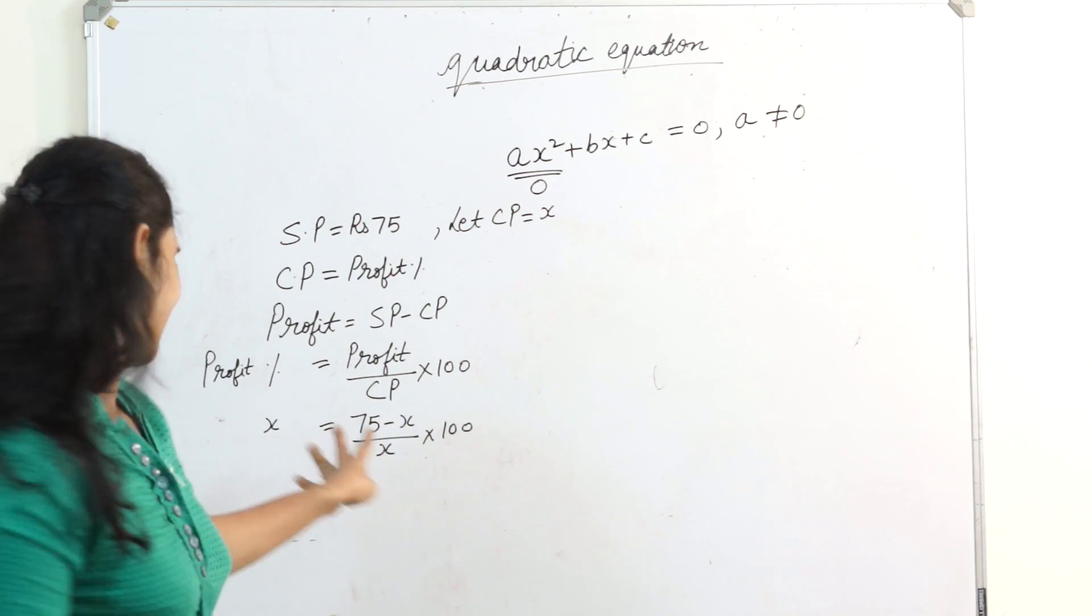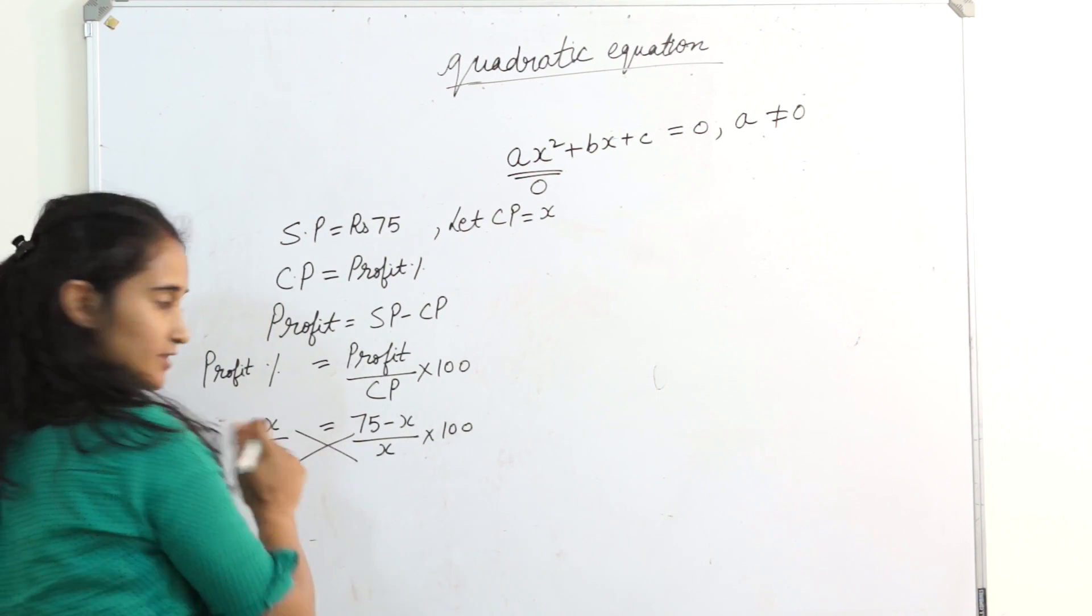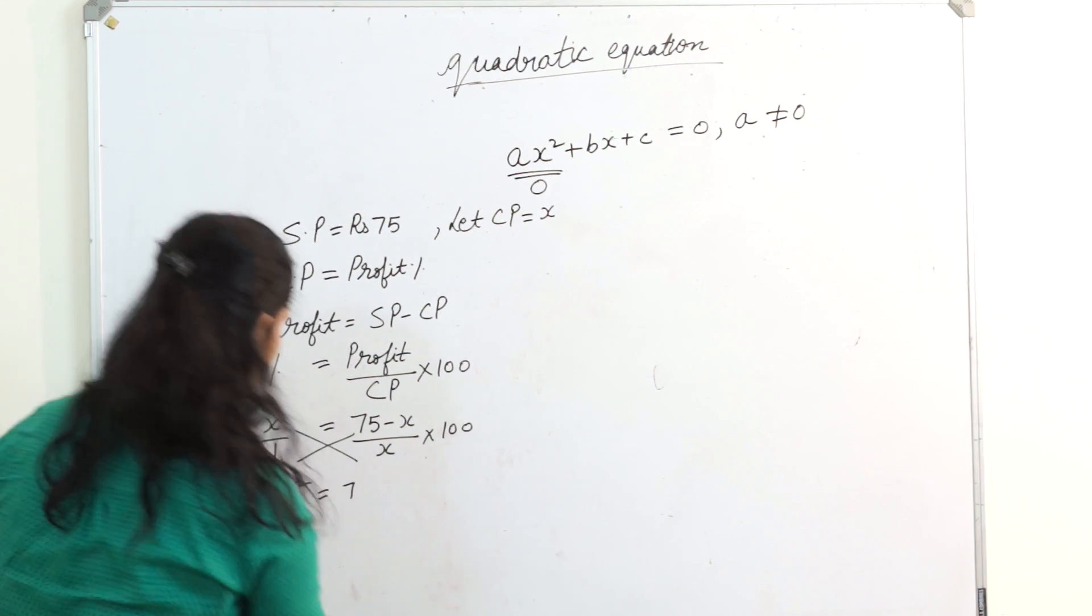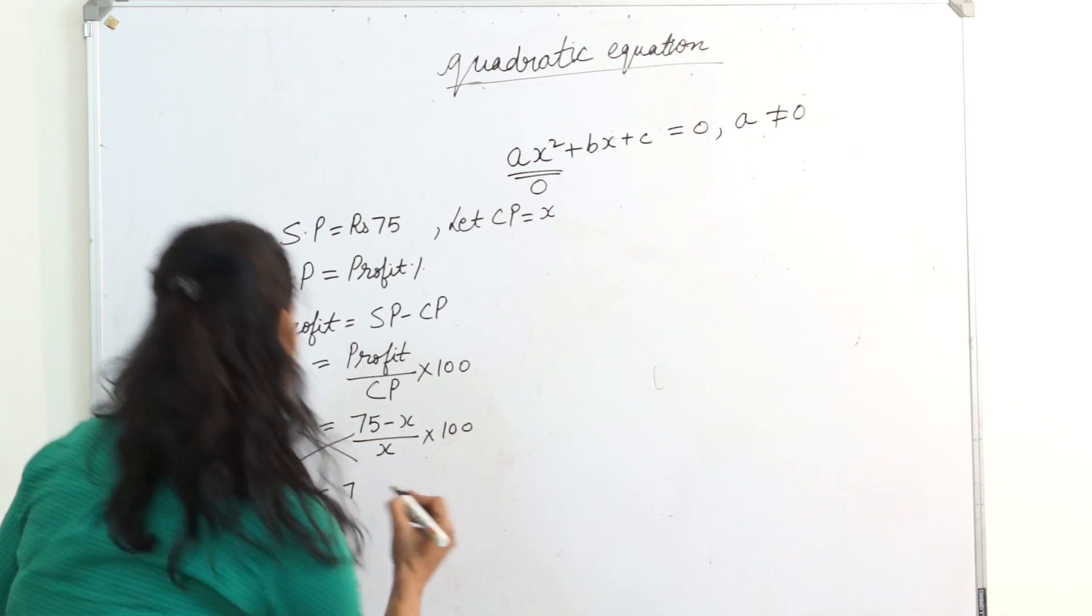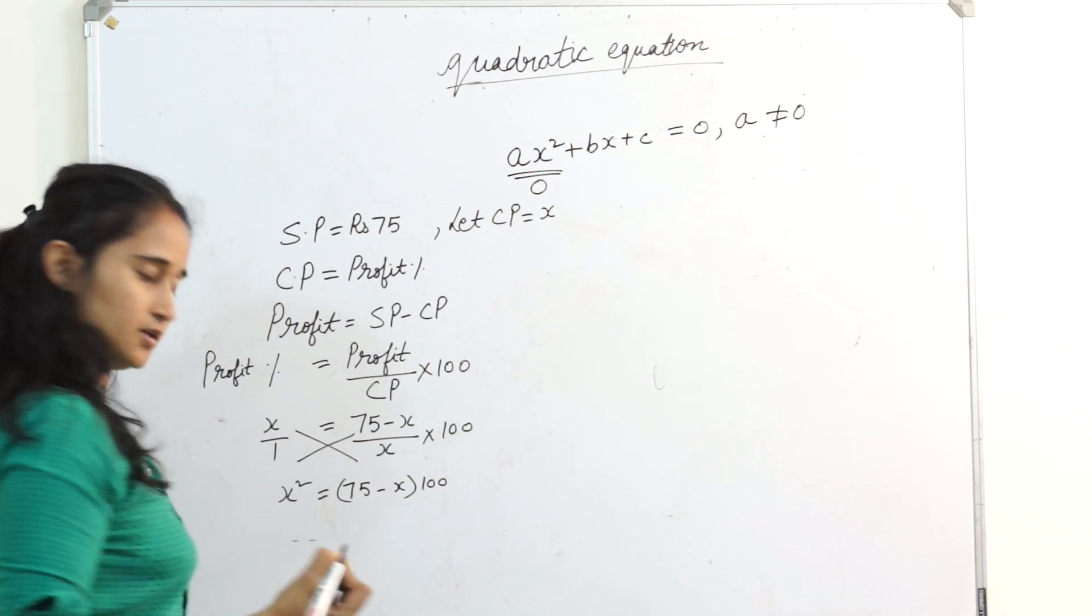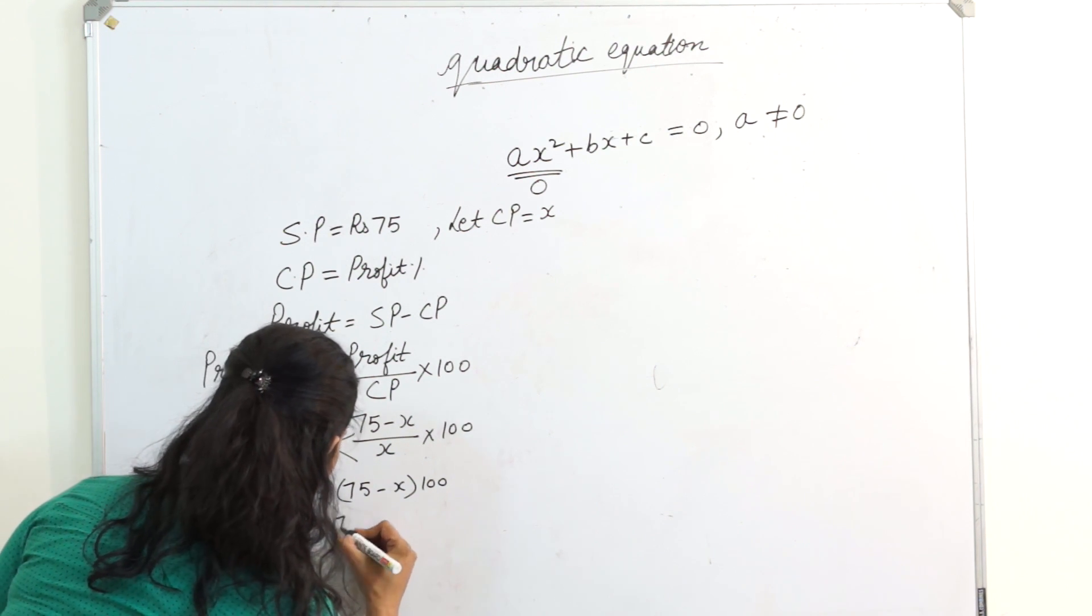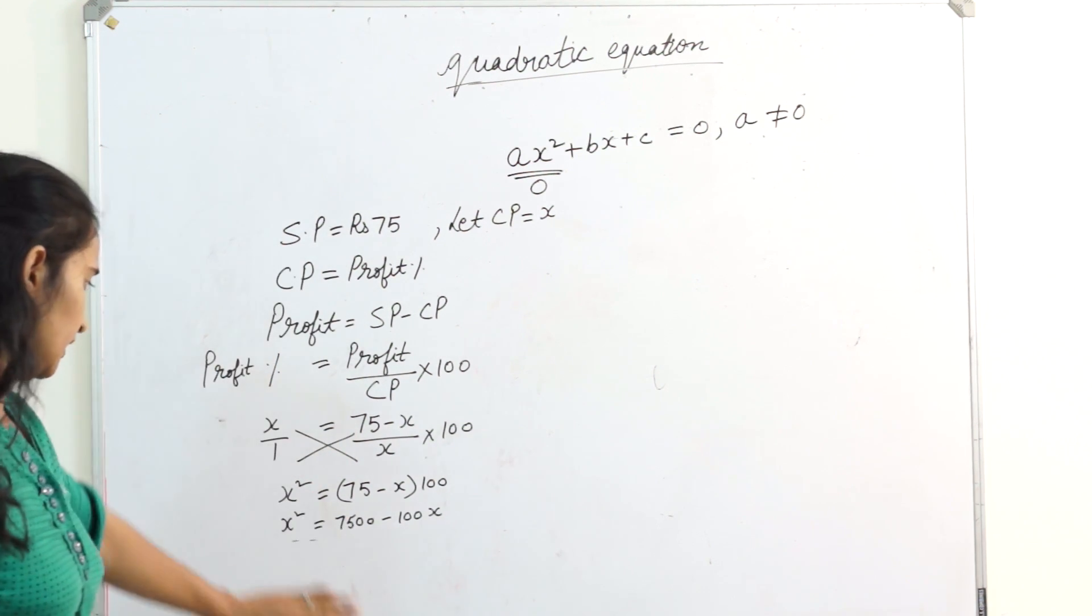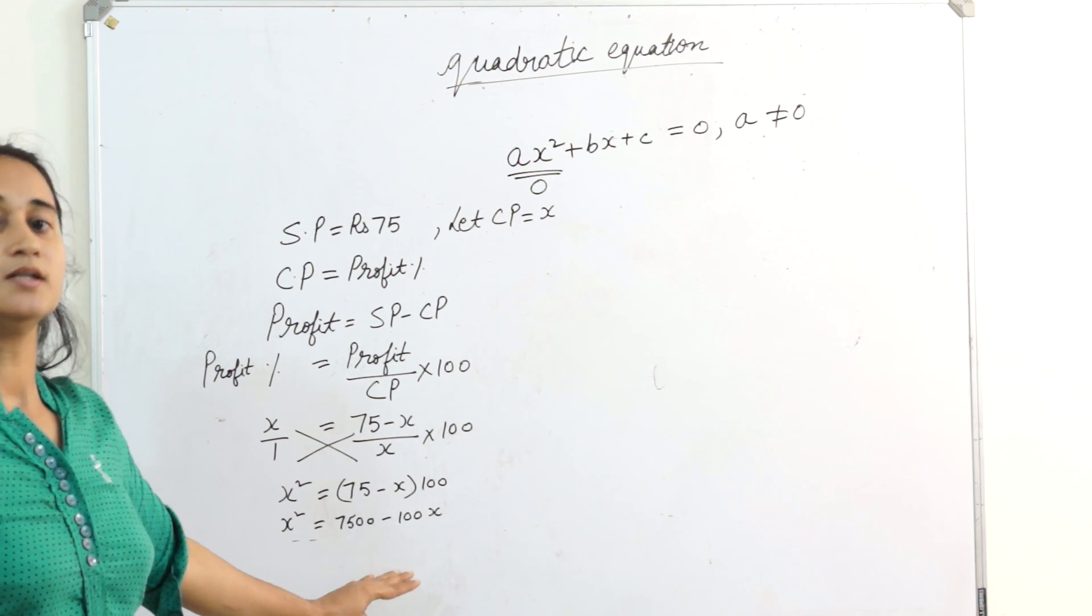So where is the magic? How we cross multiply? x into x is x square equals, this is 1, any number multiplied by 1 is the same number, 75 minus x into 100. So when we open the brackets, x square equals 7500 minus 100x. Can you see? x square equals 7500 minus 100x.